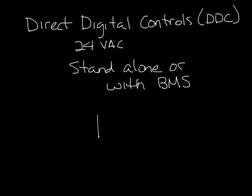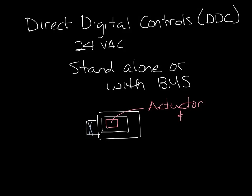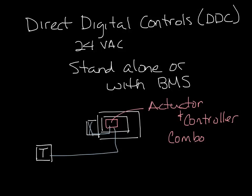So let's draw another single duct box. There's a flow sensor in the inlet, and then you have a controller-actuator combo usually. There are some models that are two parts, but frequently they're one combo unit now. And then a thermostat on the wall somewhere. Again, the thermostat is connected and the flow sensor connected to the controller, which drives the actuator.